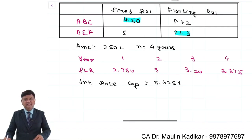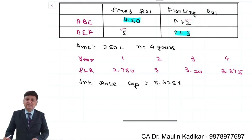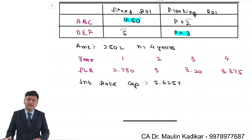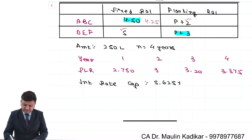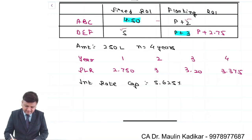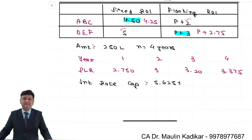So in step number one, if both of them borrow independently, then 4.5 plus 3 equals 7.5% total interest payment. Now they will be advised to borrow differently. Instead of borrowing like this, they should borrow differently — the interest rate would be 5 plus 2, that is 7. So 7.5 minus 7 gives savings of 0.5%. Whatever savings we have will be split equally, so 0.25% is what each will save. ABC Limited would finally pay 4.25% and DEF Limited would pay PLR plus 2.75%.